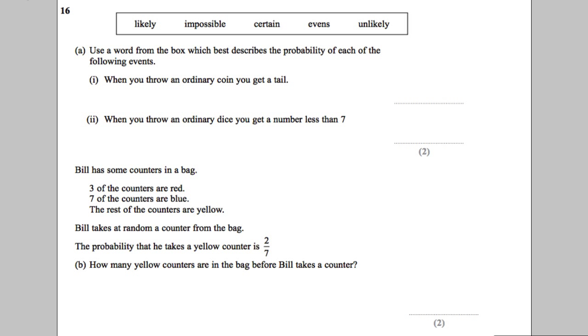Question 16. We're told the following: use the word from the box which best describes the probability of each happening. When you throw a coin, you will get a tail. So just think about it.